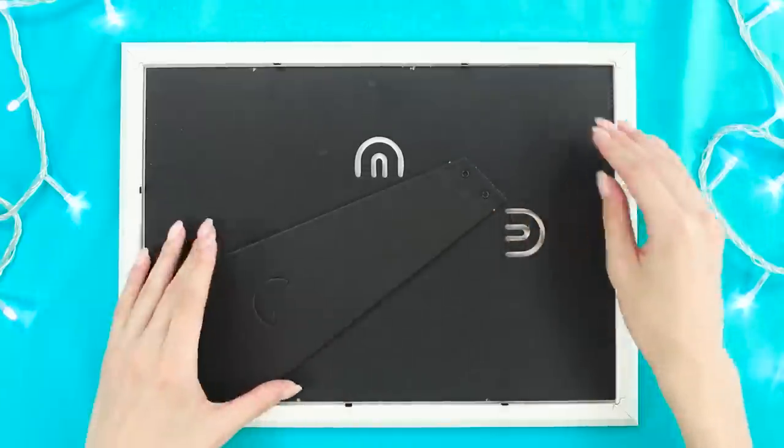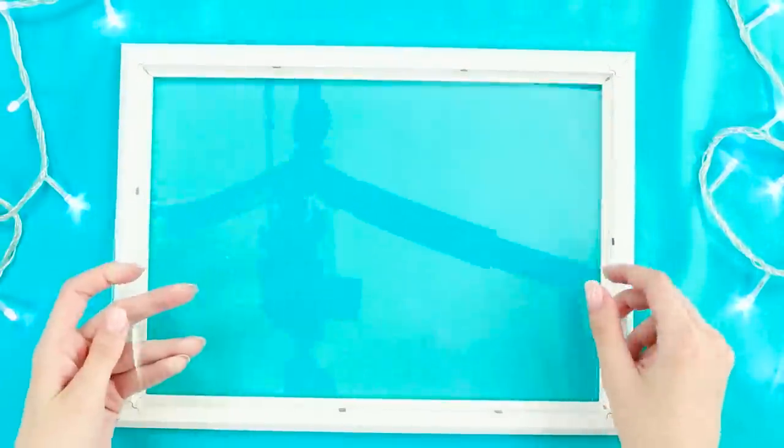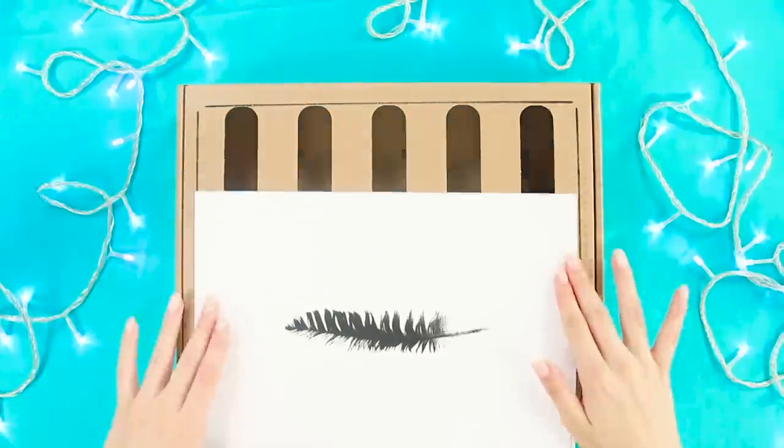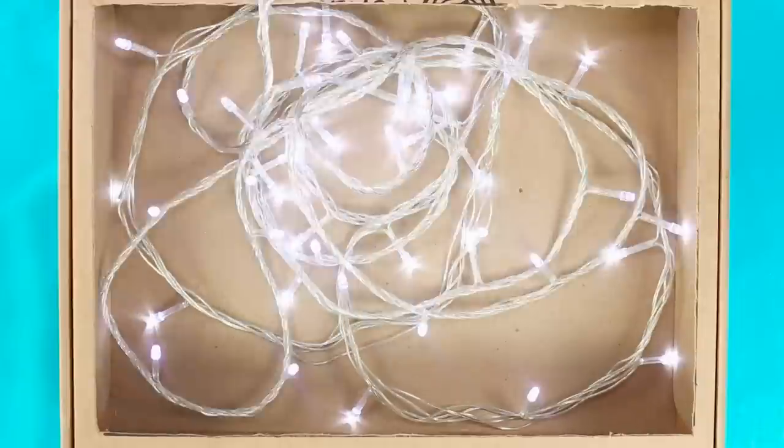Use a Christmas garland as a highlight. Take out the picture and the glass. Mark the size of the picture on the cardboard lid. Cut it out. Put the glowing garland of bulbs into the box.